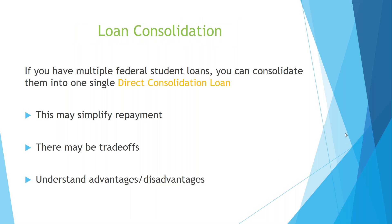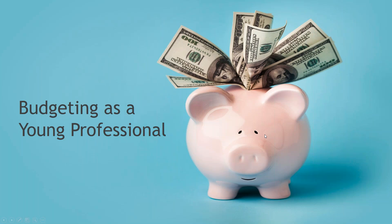If you have multiple student loans, you can consolidate them into one single direct consolidation loan. It allows you to have only one payment, which may simplify your repayment plan, but there are trade-offs, so you have to understand the advantages and disadvantages. We also have information about loan consolidation on the Montclair website — just type loan consolidation into the search engine and you'll get information from us and links to the federal government information.